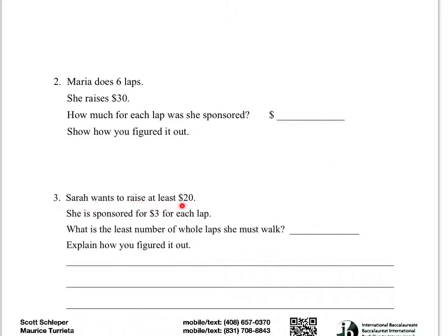Then it finally says Sarah wants to raise at least $20, so she can raise more but not less. She's sponsored for $3 each lap. So you want to figure out what is the least number of whole laps she must walk. So what is the, as long as she walks this many laps, how will she earn at least $20? She can earn more, that's fine, but you want to get as close to 20 as you can without being under 20.